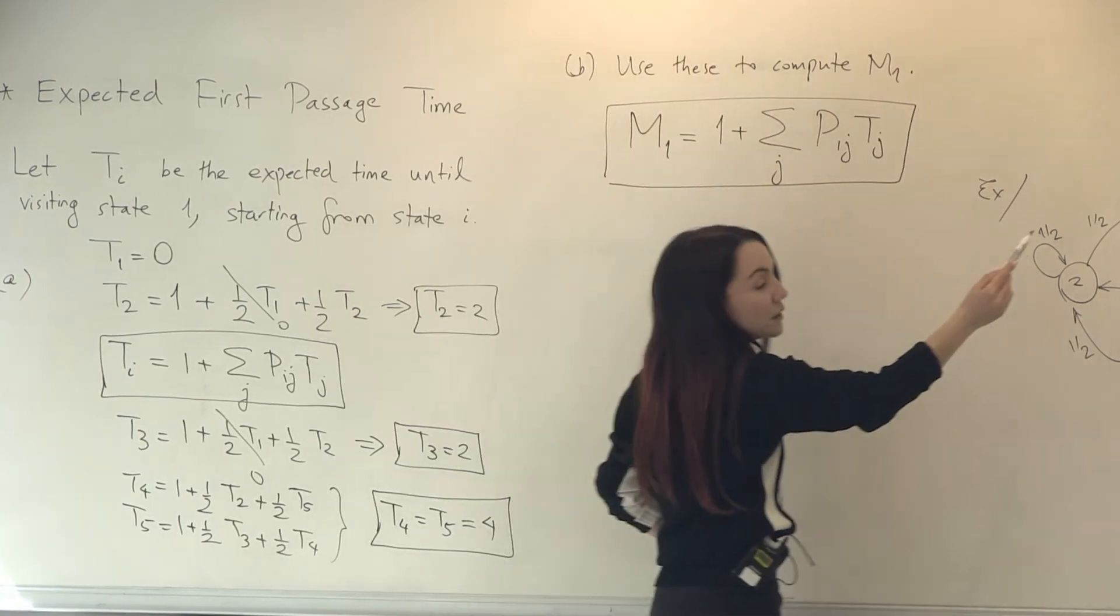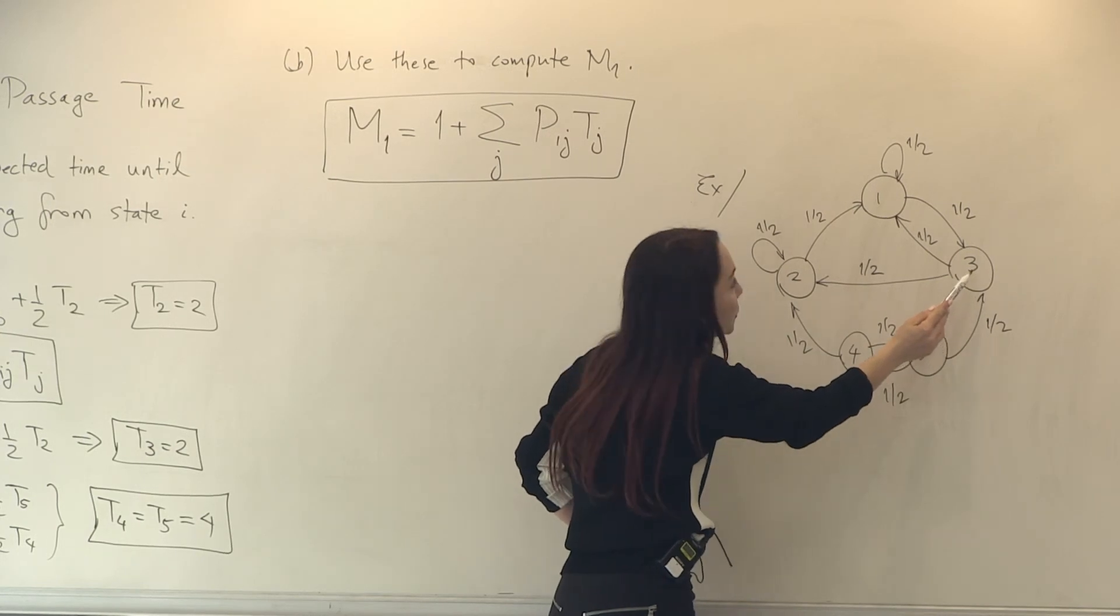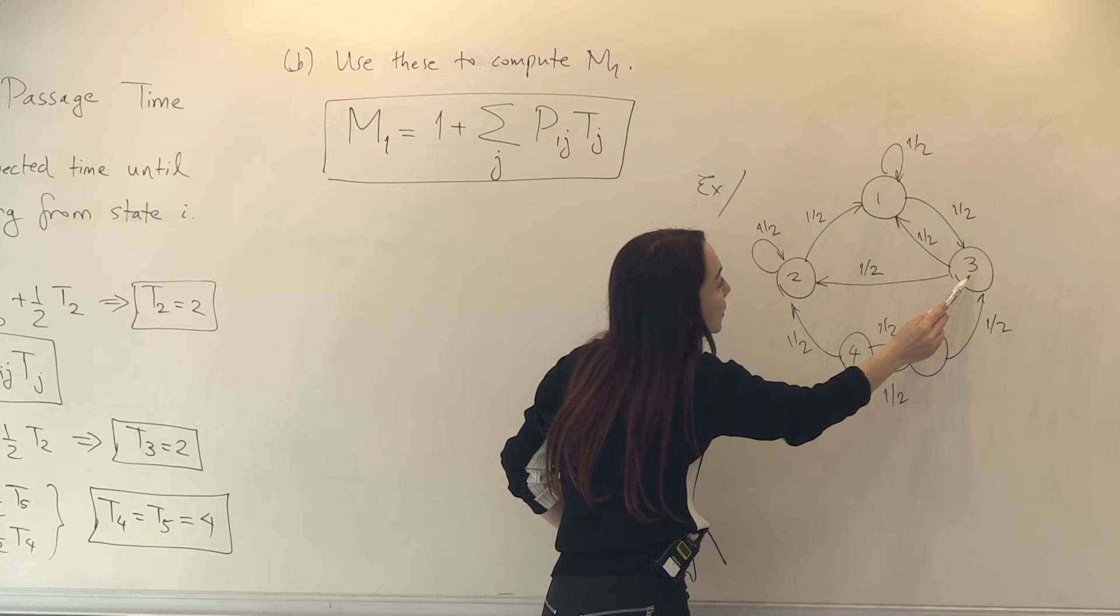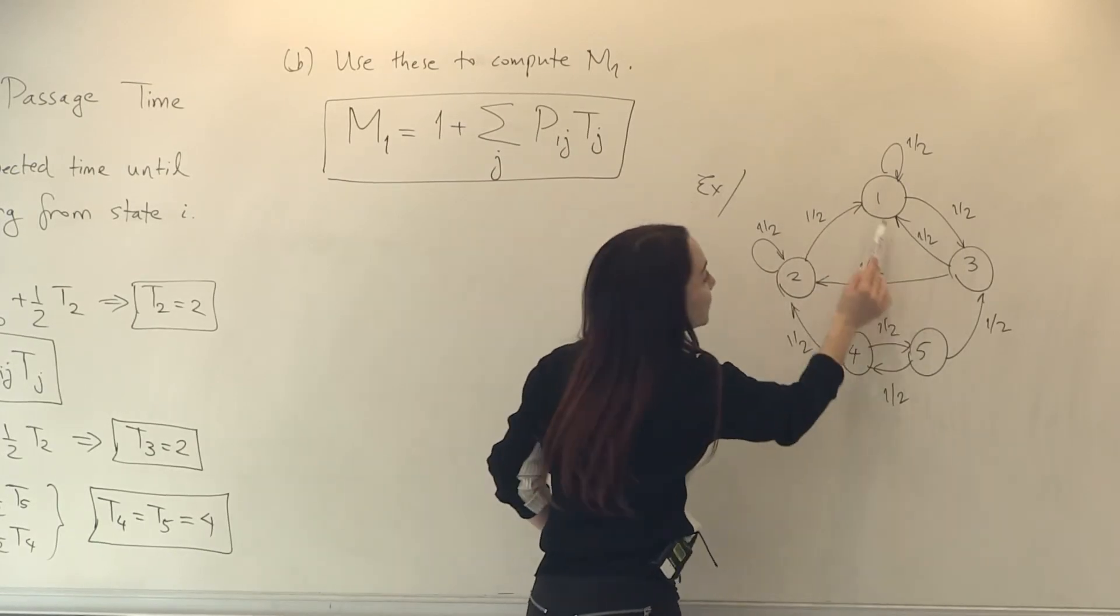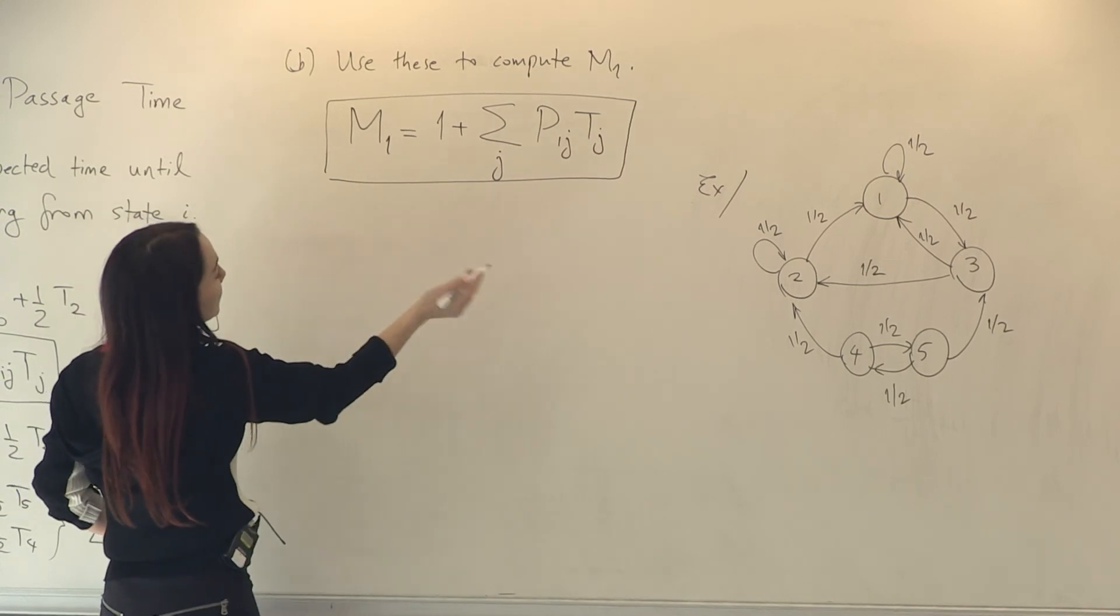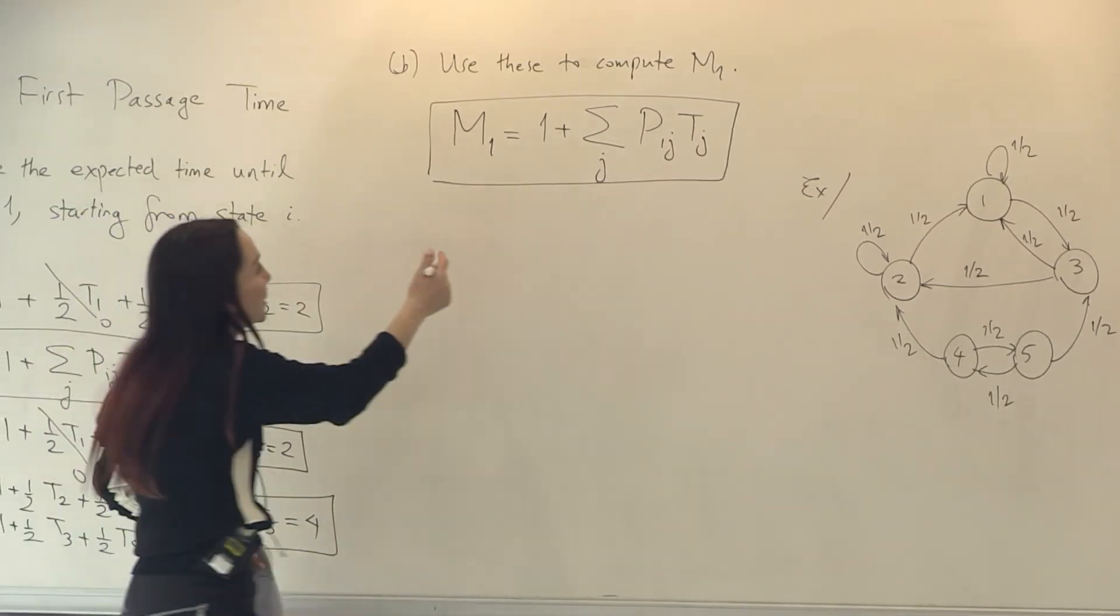Because from 1, I'll make a transition. If I go somewhere else other than 1, then I'm dealing with the first passage time until 1, right? Okay, then if no one has a problem with this, then let's just fill in the numbers.